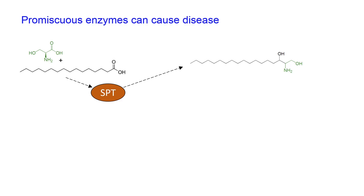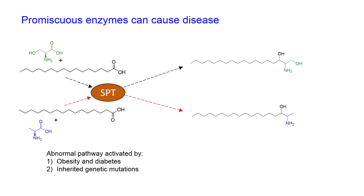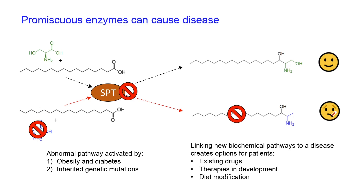One example of a promiscuous enzyme catalyzing an alternate metabolic pathway is shown here. The SBT enzyme normally takes amino acids and fatty acids and produces the lipid on the right-hand side of the screen. However, under conditions of diabetes or specific inherited genetic mutations, this enzyme will catalyze an alternate reaction leading to a toxic lipid. We have recently correlated genetic information and metabolomics data to demonstrate that these toxic lipids are elevated in the context of a particular disease of the eye. This is important for patients because we can now apply existing drugs or work to develop new therapeutic targets that inhibit production of these toxic metabolites. Dietary manipulation is also an option for the patients.